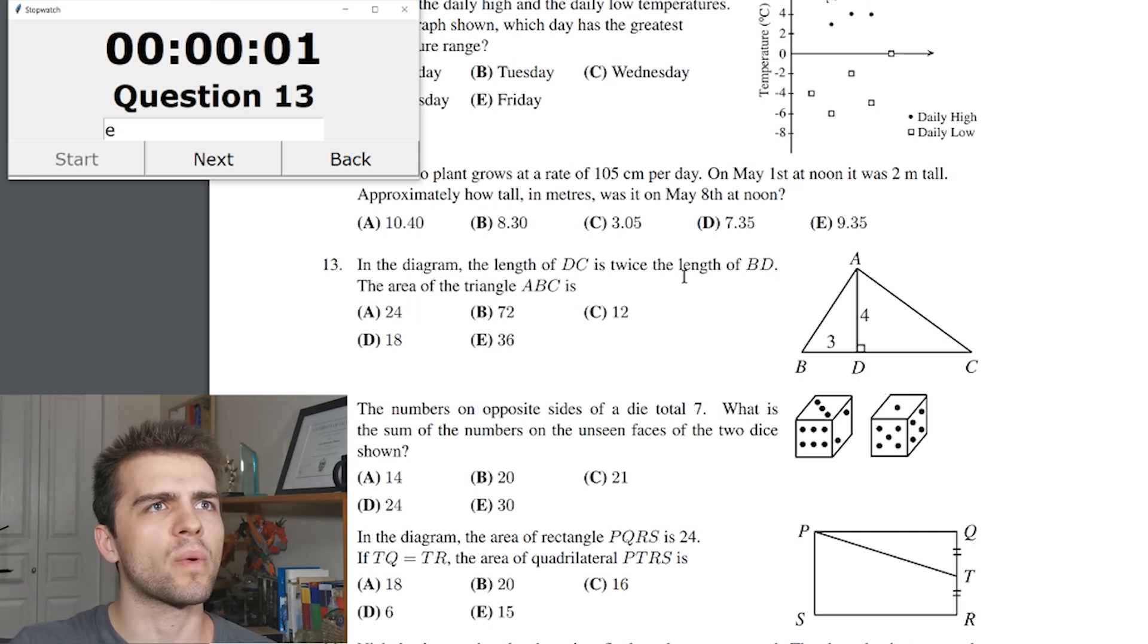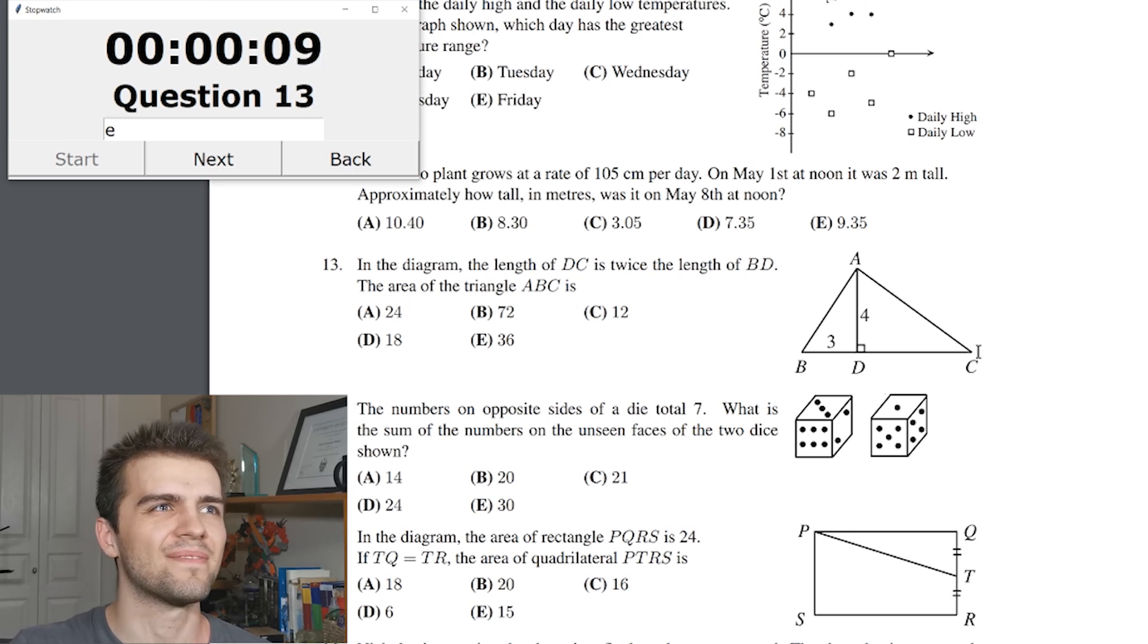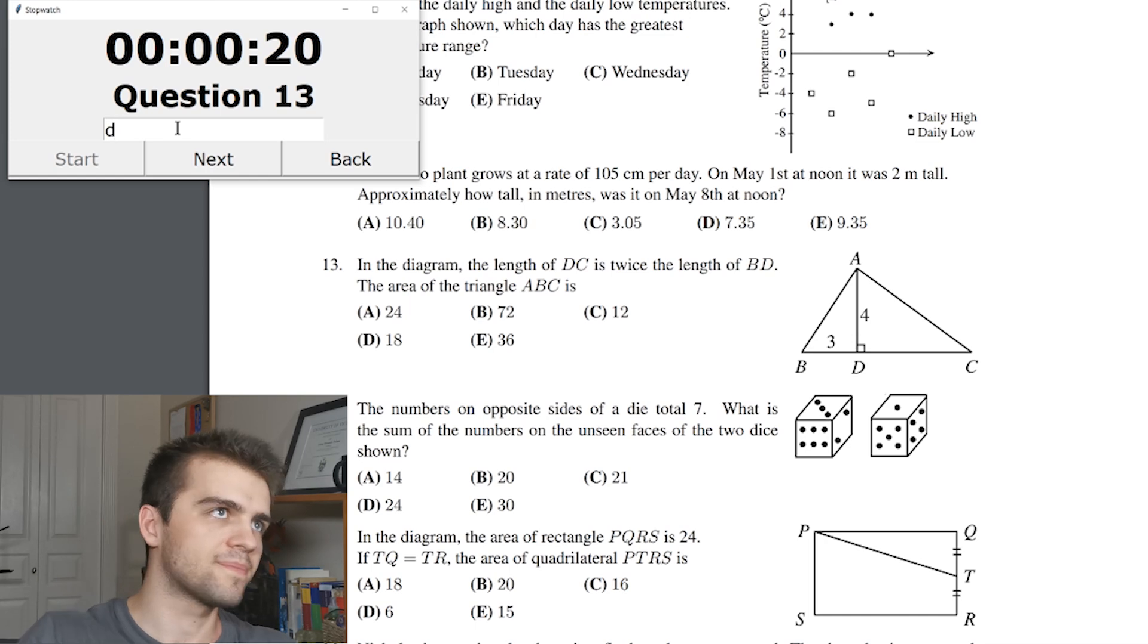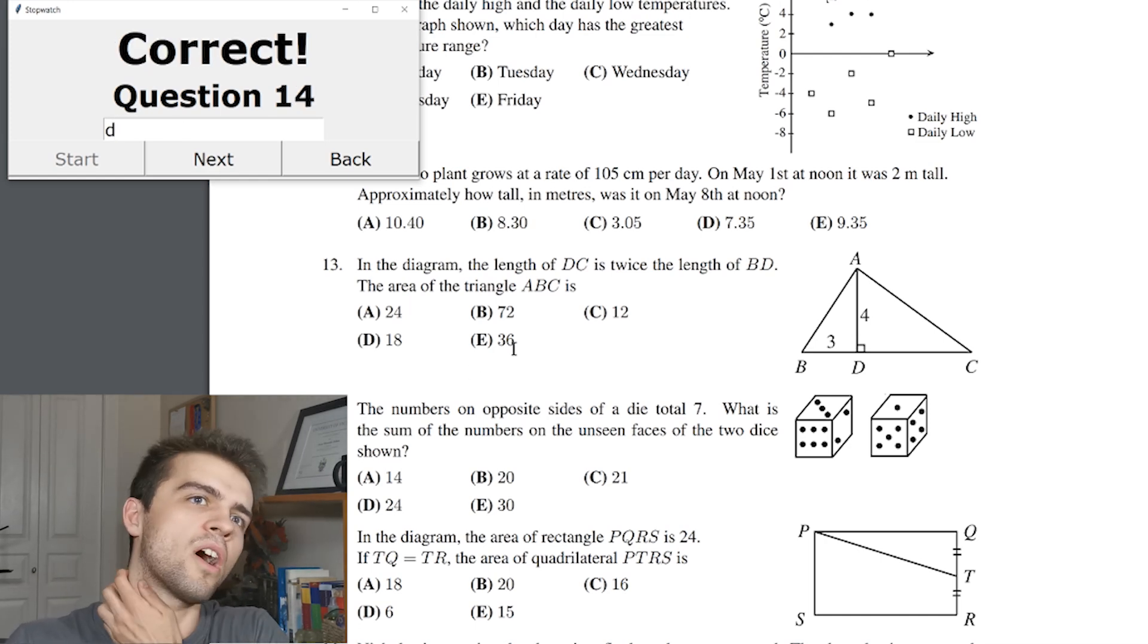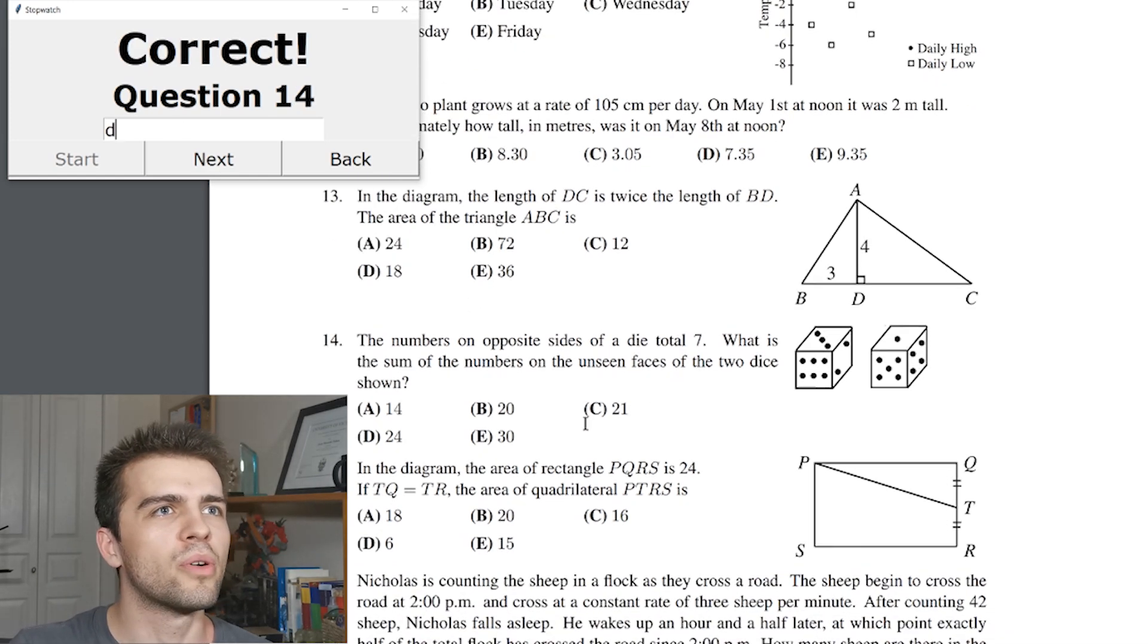In the diagram, the length of DC is twice the length of BD, the area of ABC. So DC is twice the length of BD. So 3, this has got to be 6. The area of the triangle, one-half base times height. So 6 plus 3 is 9. 9 times 4 is 36. Divided by 2 is 18. Answer is D. Alright, going pretty quick here.